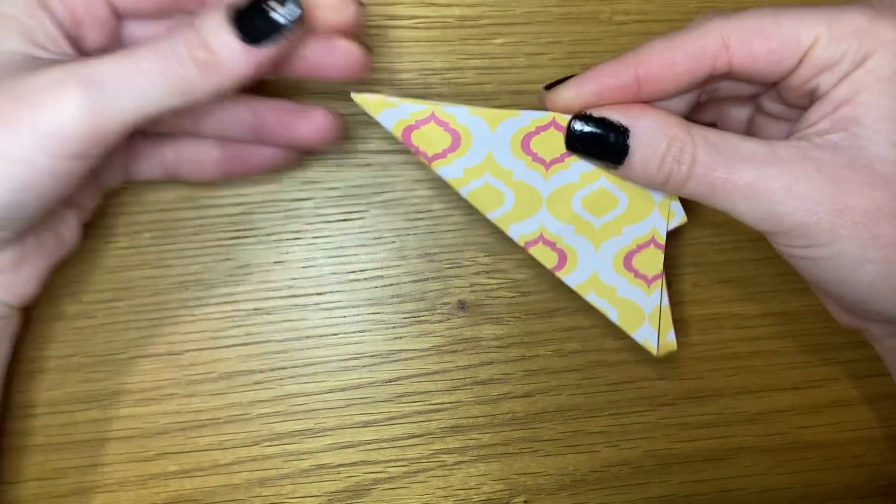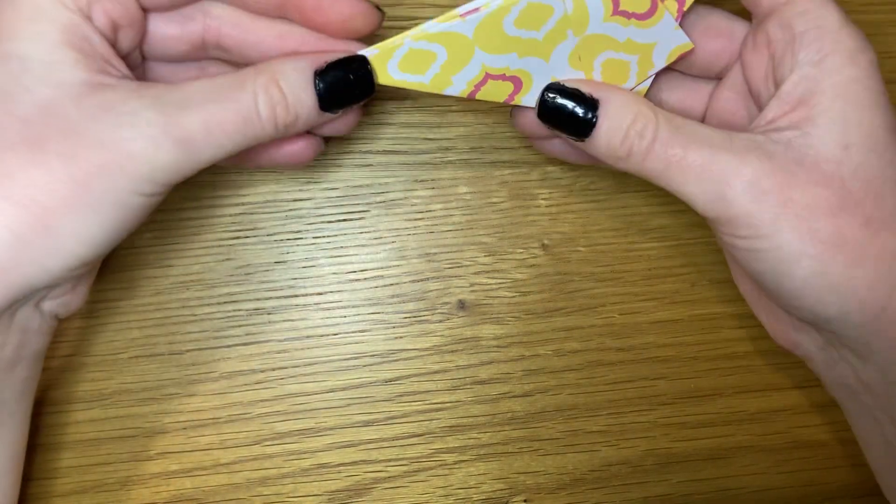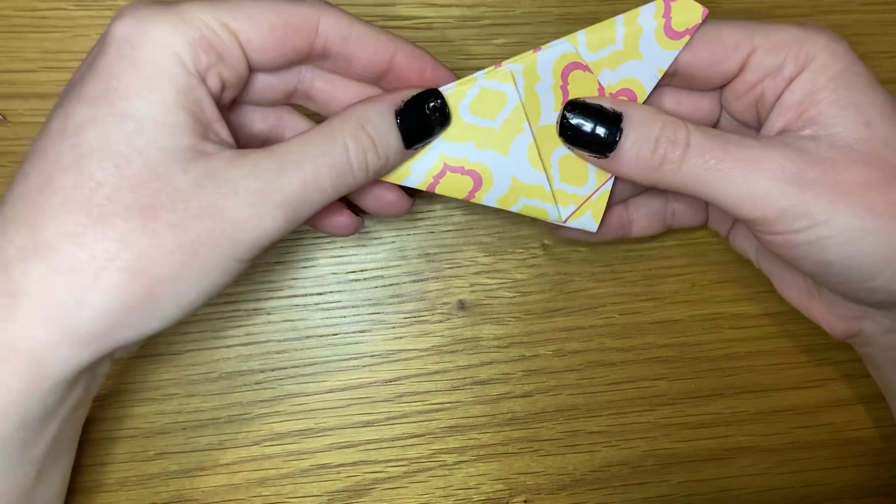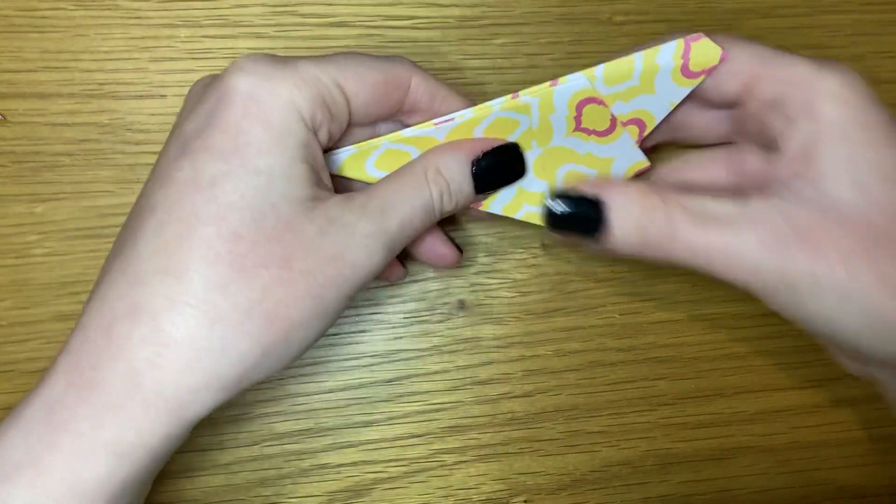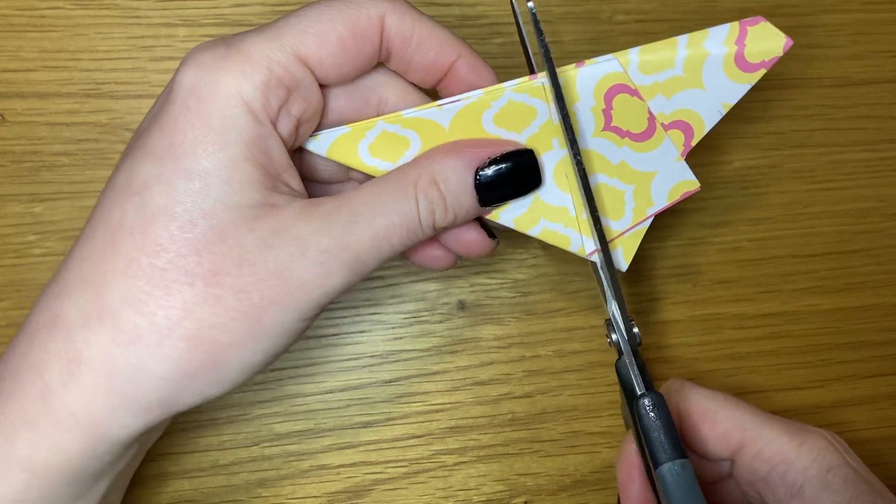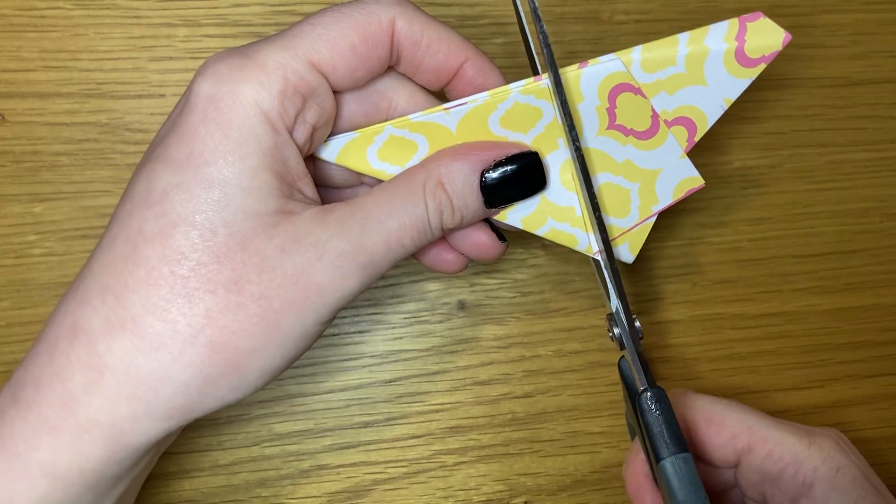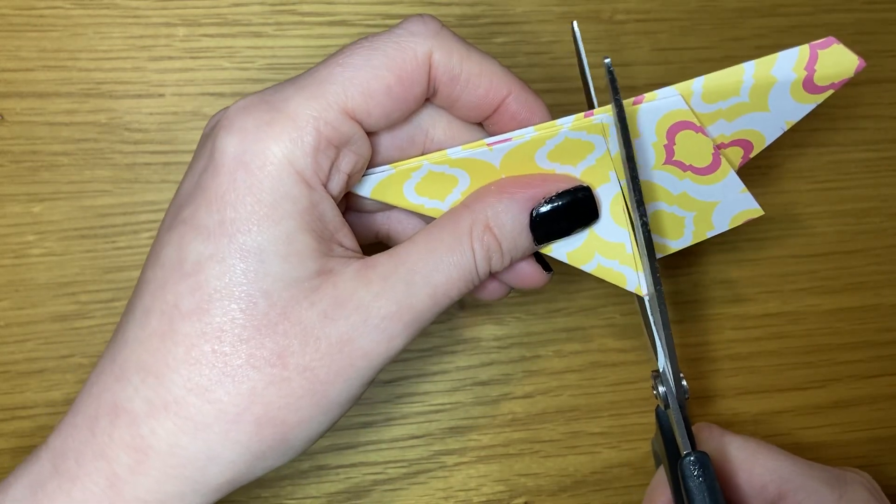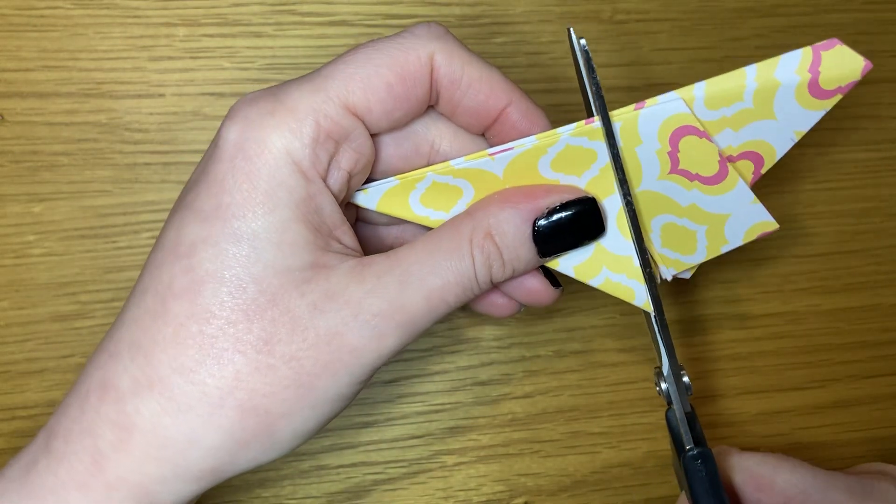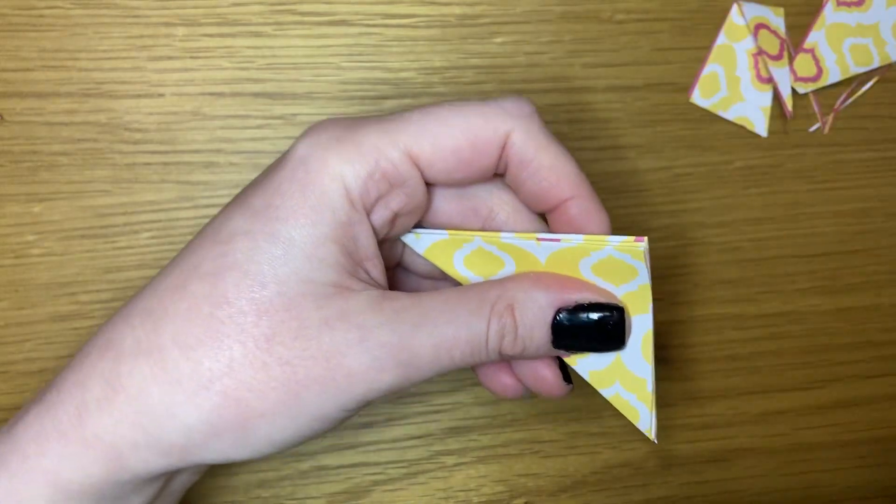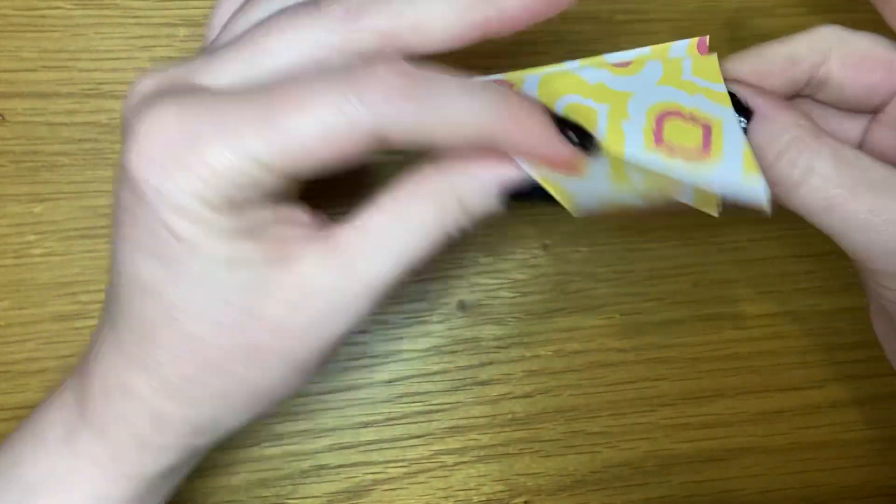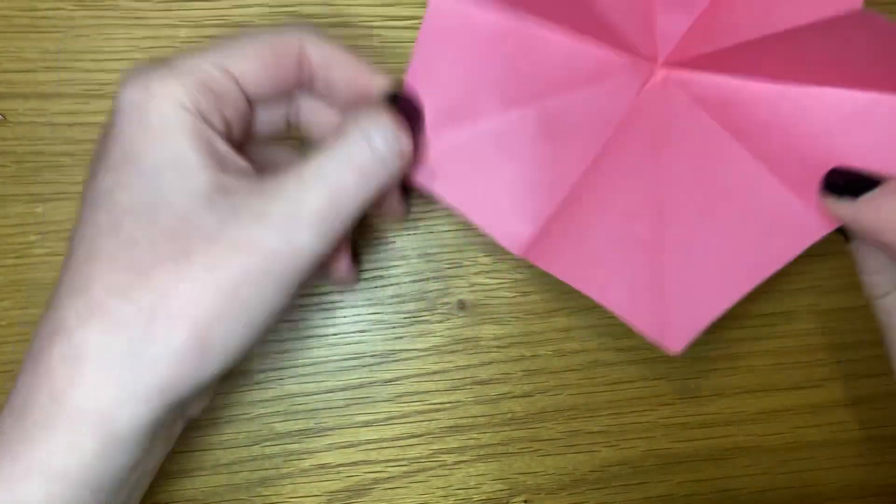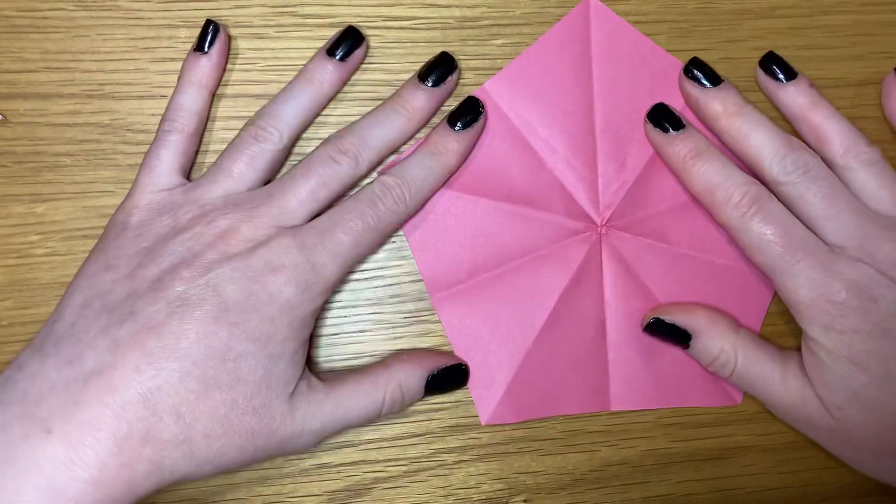This will give you a side that's fairly neat and a side that's messy. On our messy side you'll see we've got this fold here that makes a triangle. We're going to cut along the bottom of the triangle so that the triangle is now all we have. Open it out and if you've done it right you'll have a pentagon.